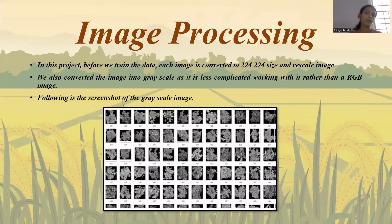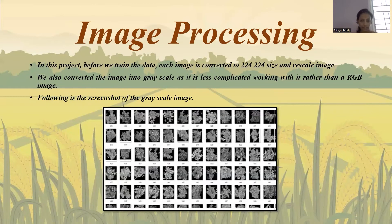Image processing is very important in this project because RGB images have three channels — red, green, and blue — which are complicated to work with. To minimize this complication, we convert the image to grayscale, making it a 2D image, and then resize it to 224 by 224 pixels. The reason for this specific size will be explained in a later slide.